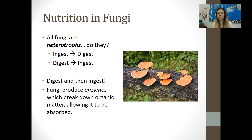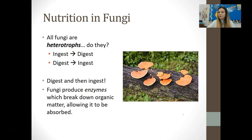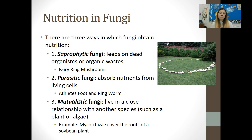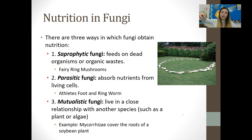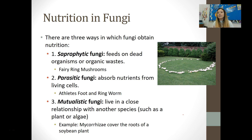All fungi are heterotrophic, but unlike us, they digest outside their body first. They release enzymes to break down dead and decaying materials outside their body, then absorb those nutrients. There are three ways fungi can obtain nutrition: saprophytic fungi feed on dead and decaying substances like typical mushrooms; parasitic fungi like athlete's foot and ringworm — which is actually a fungus, not a worm — absorb nutrients from living cells; and mutualistic fungi live in a close relationship with another species like plants or algae to obtain their nutrition. Mycorrhizae covering the roots of a soybean plant is a good example.